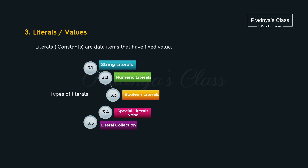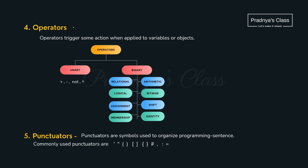Here comes the third token, literals. Literals are constants. As we have different data types in Python, we have different types of constants too. The next token is operators, which is very important. Operators are of three types: unary, which operates on a single operand; binary, which operates on two operands; and ternary, which operates on three operands.